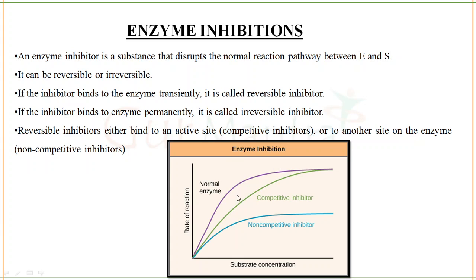This is an enzyme inhibition graph. On the x-axis is substrate concentration and on the y-axis is rate of reaction. The normal enzyme without any inhibitor — the violet line — follows Michaelis-Menten, reaching Vmax. The green line is the competitive inhibitor and the blue line is the non-competitive inhibitor. The competitive inhibitor competes with the substrate to bind to the active site of the enzyme.